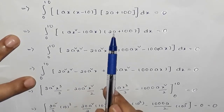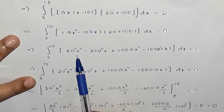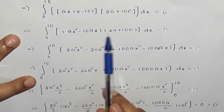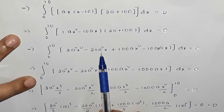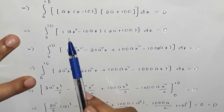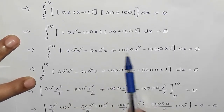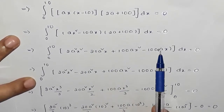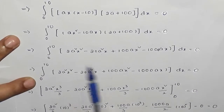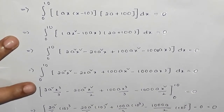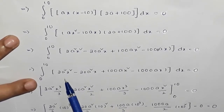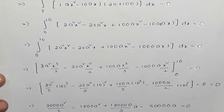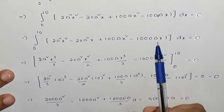Expanding the product, we get terms: 2a·x squared, 100·x squared, −10ax, and −1000ax squared, all collected inside the integral from 0 to 10 dx.